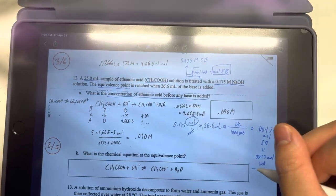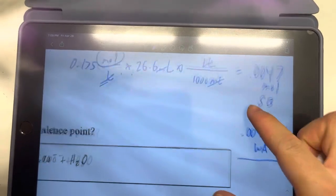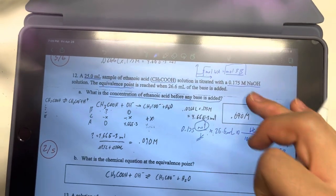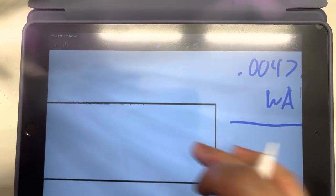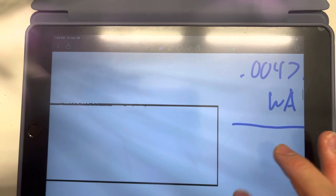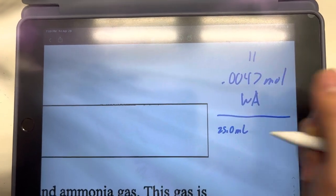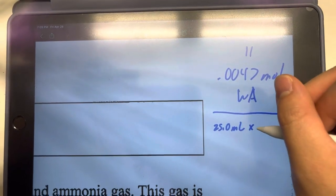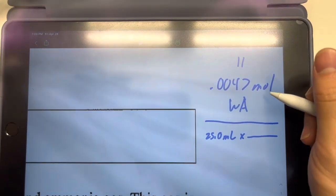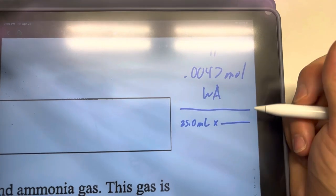And now the second to last step would be to convert this into the concentration. So what we have is 25.0 milliliters. And then we convert that to liters by dimensional analysis so that we can get moles over liters, which is the concentration of molar.